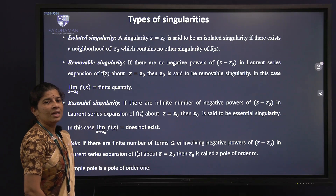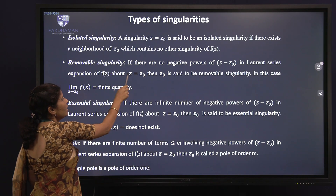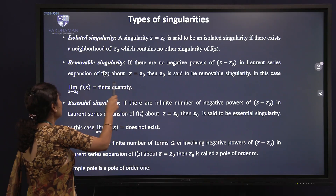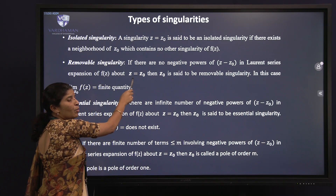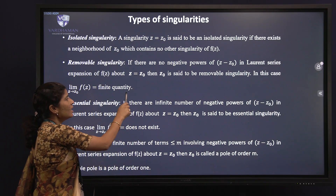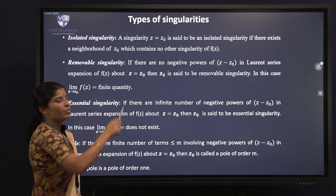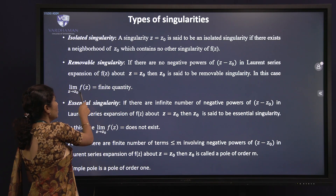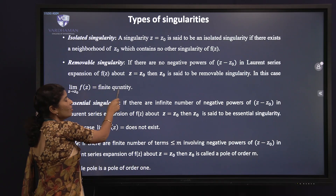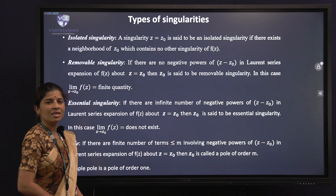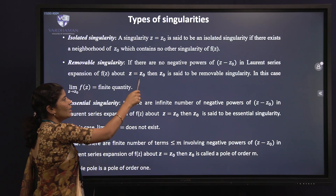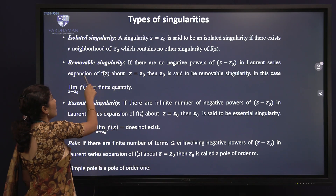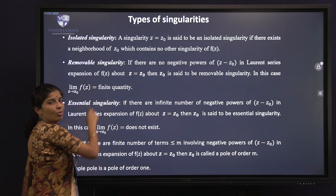Next is the removable singularity. If there are no negative powers of (z - z₀) in the Laurent series expansion of f(z) about z = z₀, then z₀ is said to be a removable singularity. In this case, the limit as z tends to z₀ of f(z) is a finite quantity.